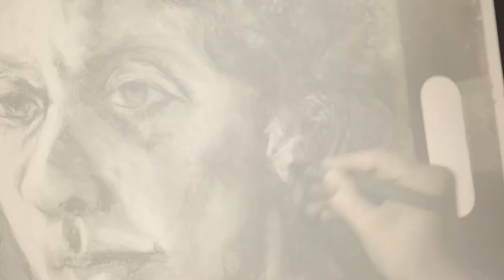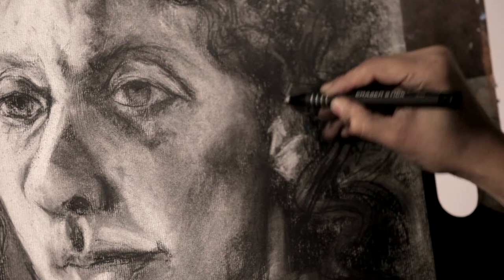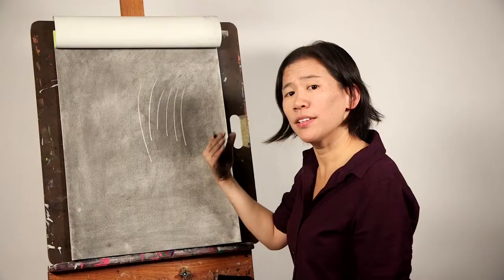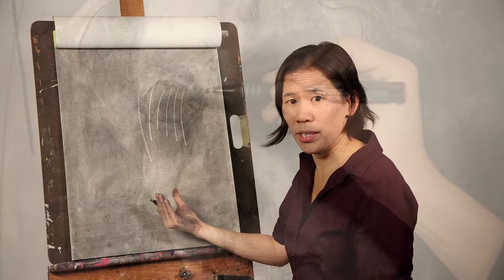Usually the eraser stick is best used towards the end of the drawing when you're adding details. You don't need to press very hard with the eraser stick. The charcoal actually lifts really easily, and at this point at the end of a drawing your drawing pace is going to slow down quite a bit, so the tightness of the eraser stick is really good for that.